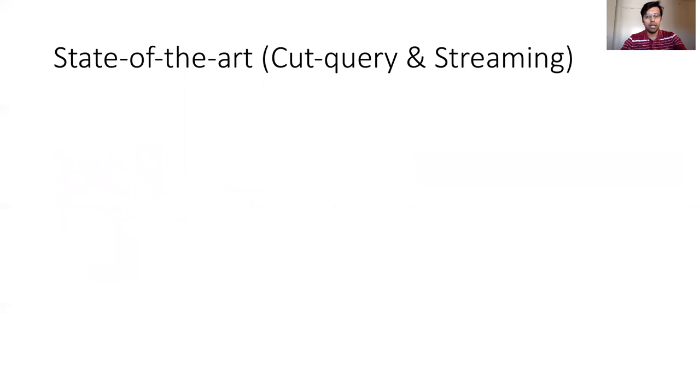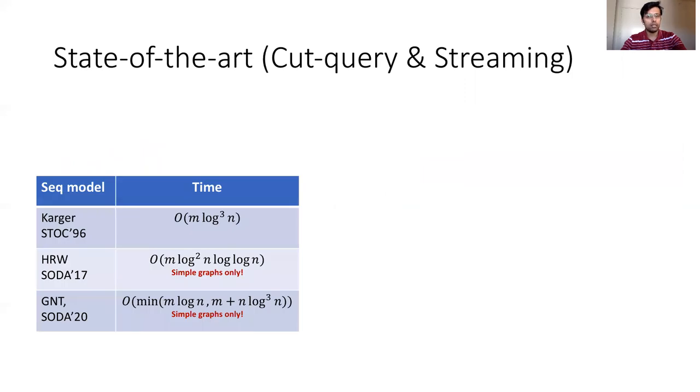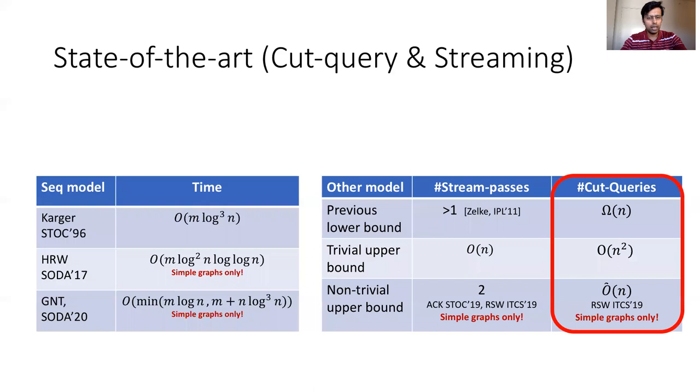We will now quickly mention the lay of the land in the cut query and the streaming model for the minimum cut problem. We have already seen the state of the art in the sequential model with Karger's work and its improvements with respect to simple graphs. For cut query, it is not hard to see we need to make omega n queries. This follows from a simple reduction from the communication complexity of set disjointness. Of course, the trivial upper bound is order n squared where we ask for every cut in order to find the minimum cut. Rubinstein et al. recently showed an algorithm which makes order n cut queries to find out the min cut. Again, for their algorithm to work, the graph has to be a simple graph.